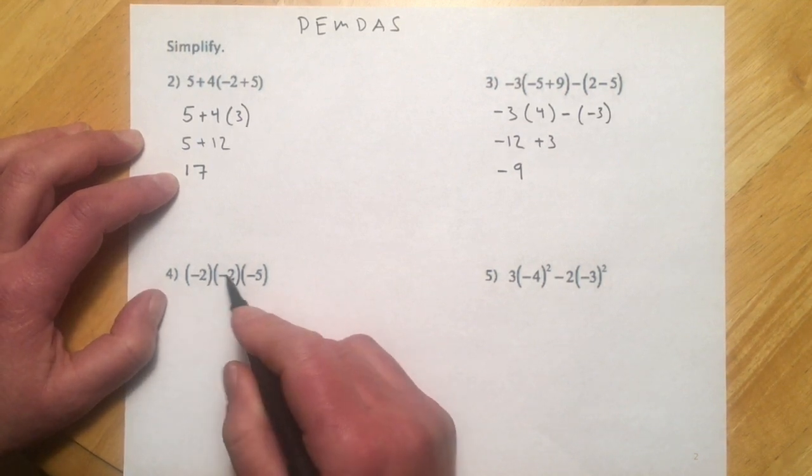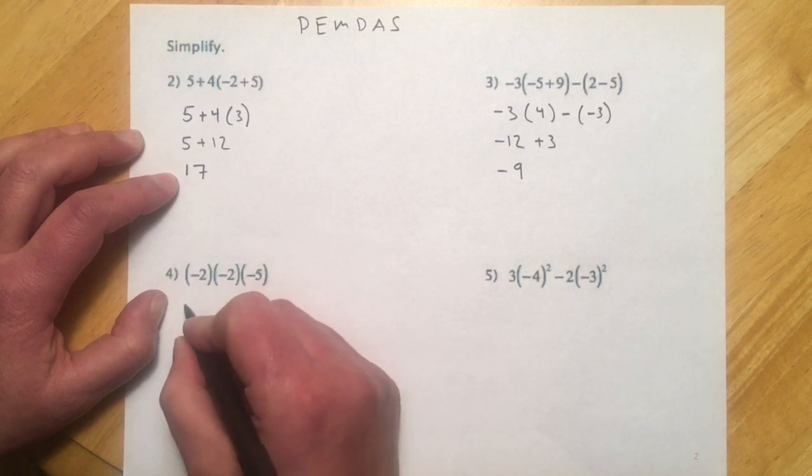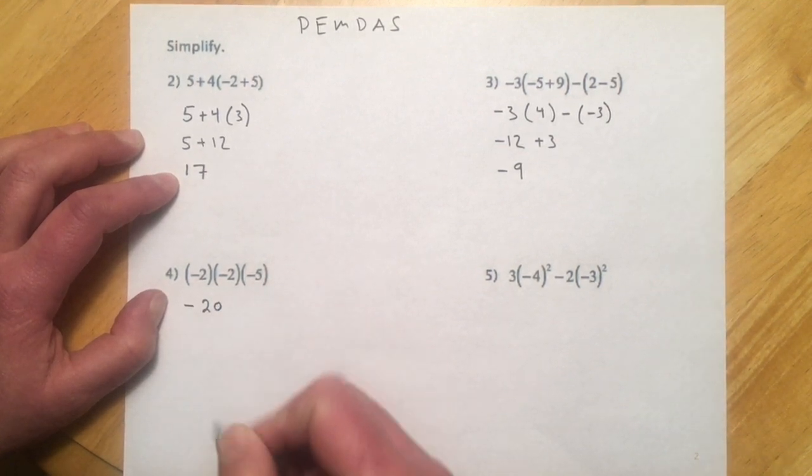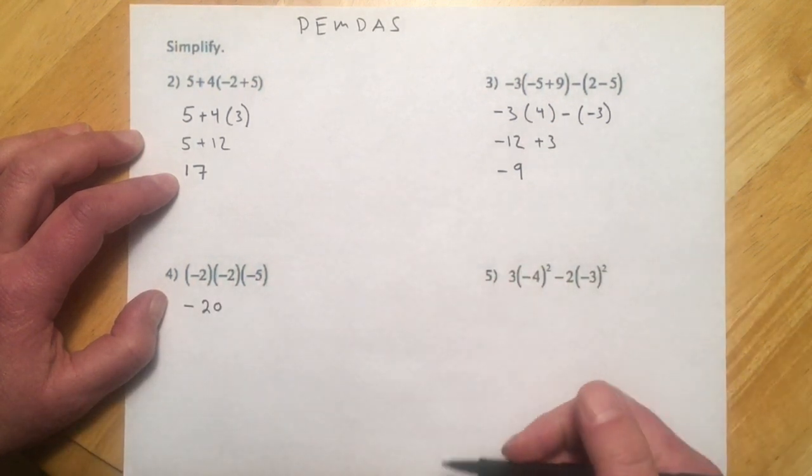This one, so 2 times 2 is 4, times 5 is 20, but then it's 1, 2, 3 negative signs, so that makes it negative 20. Again, if we have an odd number of negative signs, negative, even number of negative signs would make a positive.